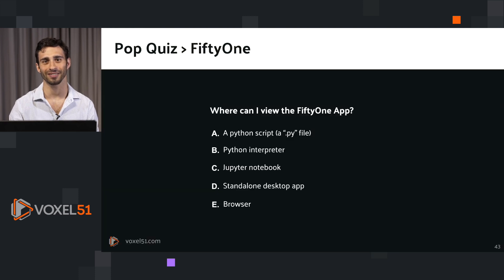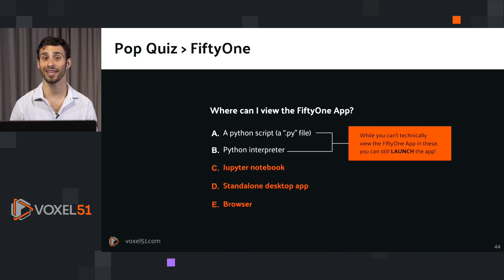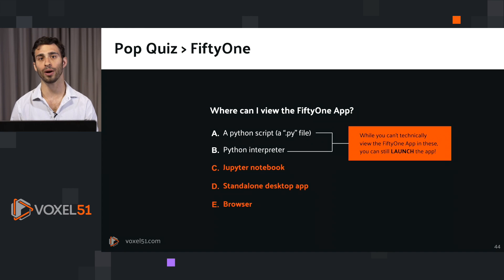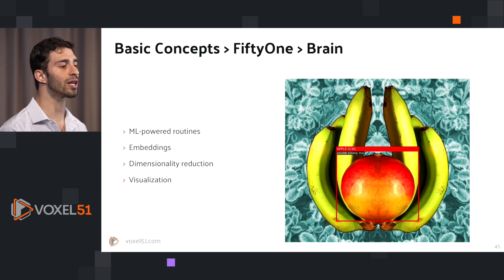Where can you view the FiftyOne app? Options: A) Python script, B) Python interpreter, C) Jupyter notebook, D) standalone desktop app, or E) in your browser. The answer is C through E. You can view it in a Jupyter notebook cell output, as a standalone desktop app (requiring a slightly different installation), or in your browser via localhost. This is a bit of a trick question — you can also launch the FiftyOne app from a Python script or interpreter, but it can only be visualized in options C through E.